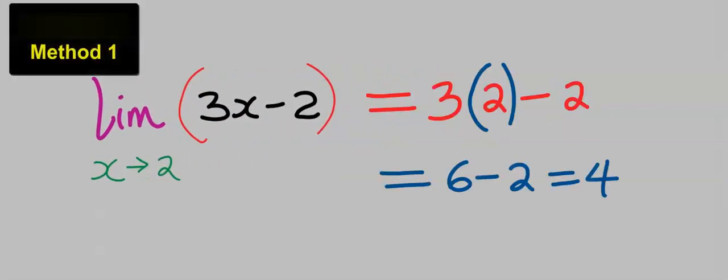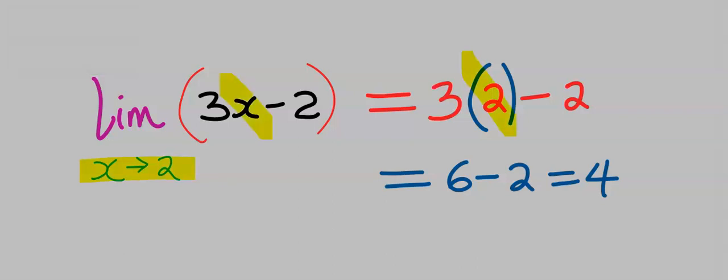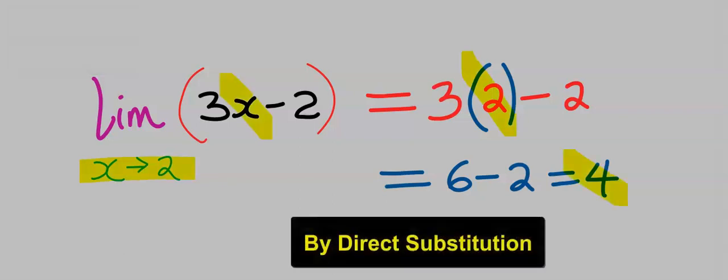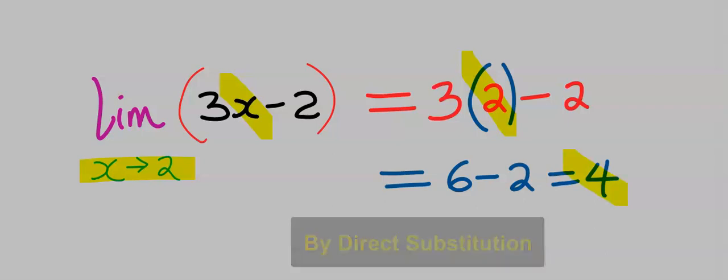Consider this question. If you plug in x equal to 2 into this function, you are going to get 4. Here, we got no restriction. There is nothing to remove.